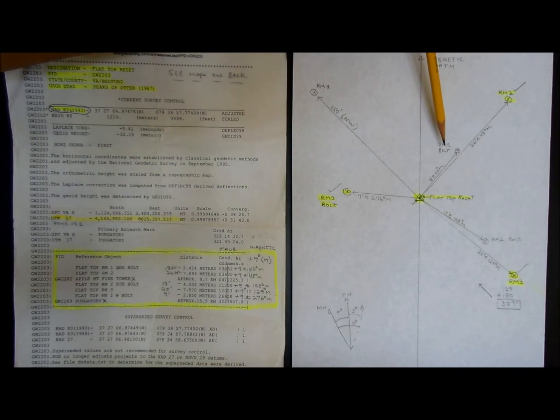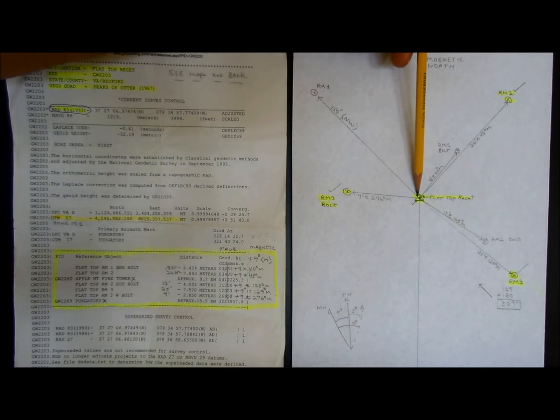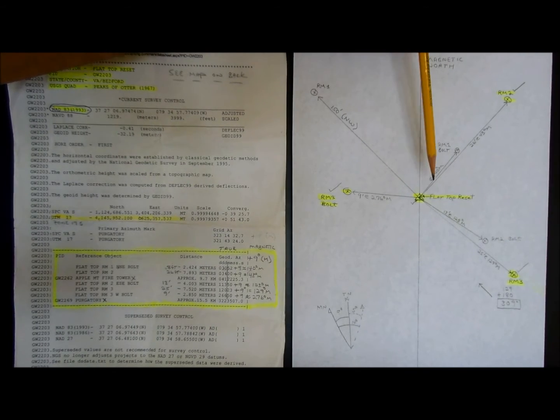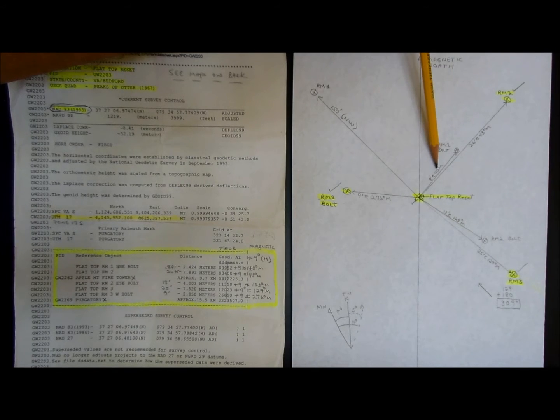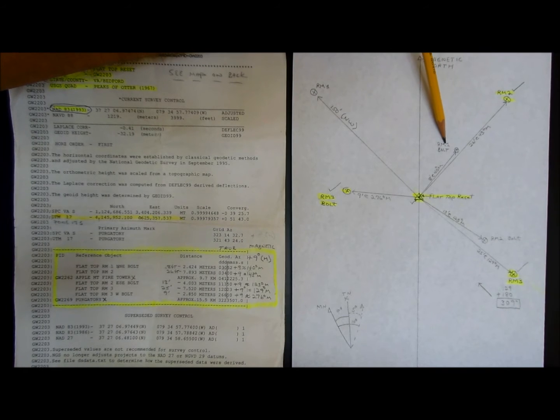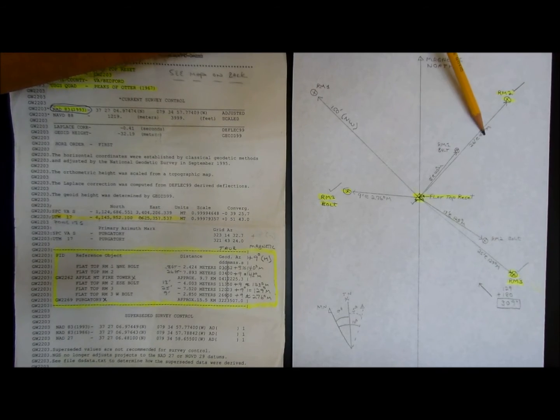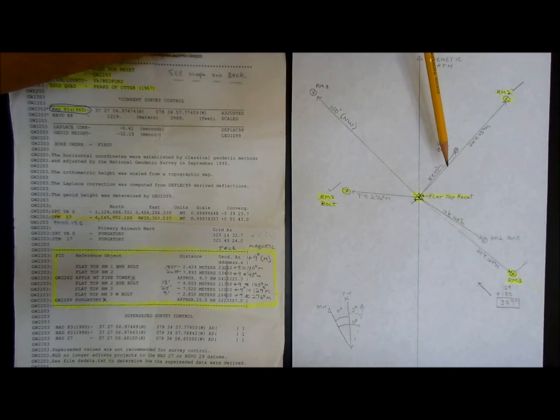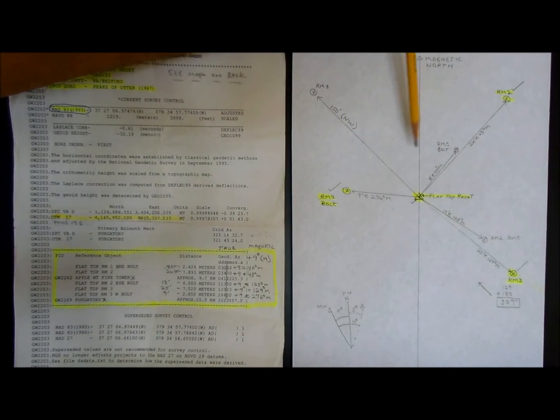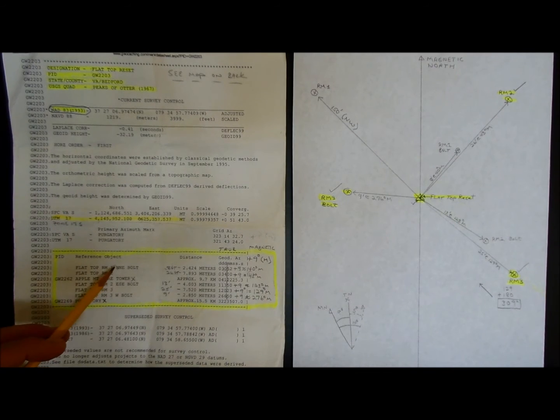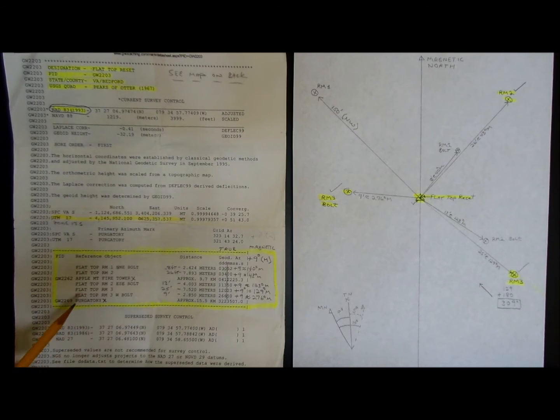If you look at this diagram over here, what I did was I said, okay, here's my benchmark, Flattop Reset. And here's 8 feet at 40 degrees magnetic right there, RM1 bolt. So I'm drawing a diagram, and if you use a protractor like I did to get accurate angles, this thing will actually show you which way to look when you get out in the field. So you do that for all these other reference marks.